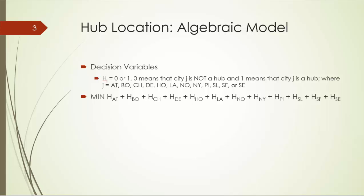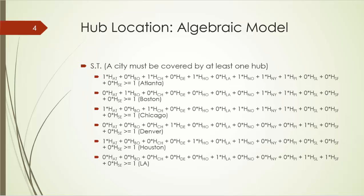Our objective is to minimize the total number of hubs. The total number of hubs is given by the sum of all those 12 binary variables. That is h Atlanta plus h Boston plus all the way to h Seattle. Next, let's look at our constraint. Besides the binary constraints, of course, there's only one main constraint.